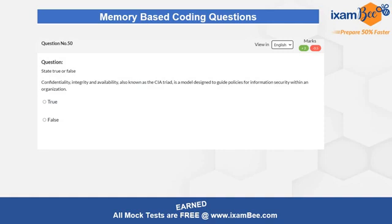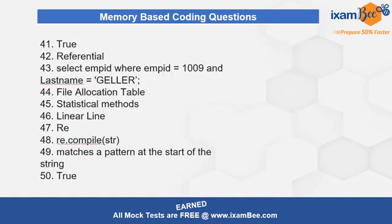If you feel the video was fast at any point, go back, pause the video, attempt the question, and then move to the next. Once you are done with all the questions, here are all the answers so you can give yourself a self-evaluation. Take your time, mark your answers, and check where you were correct and where you were not. For a correct attempt, plus one; for an incorrect attempt, minus 0.25.